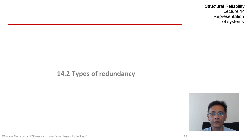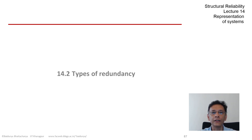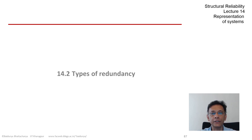In contrast, consider the Ronan Point failure that we discussed, or the recent Boeing 737 MAX crashes in October 2018 and March 2019. These were glaring single points of failure allowed in these designs, and these failures happened almost as soon as the systems were pressed into service.